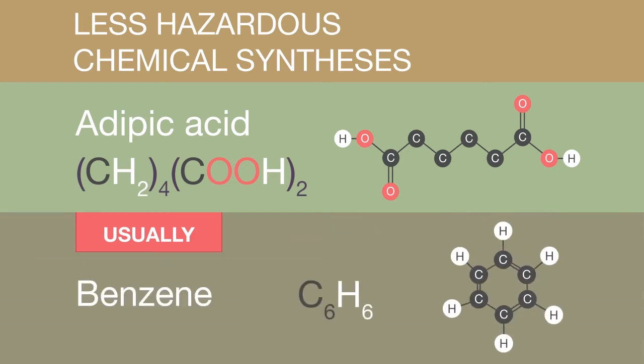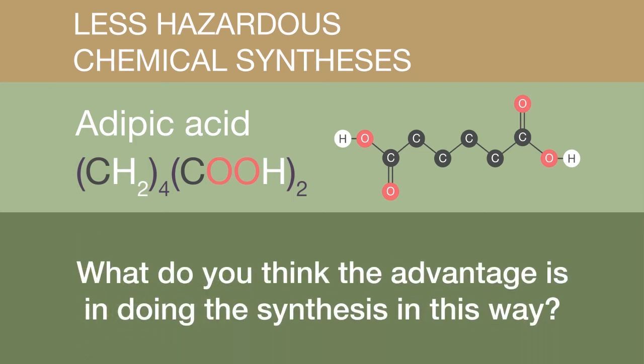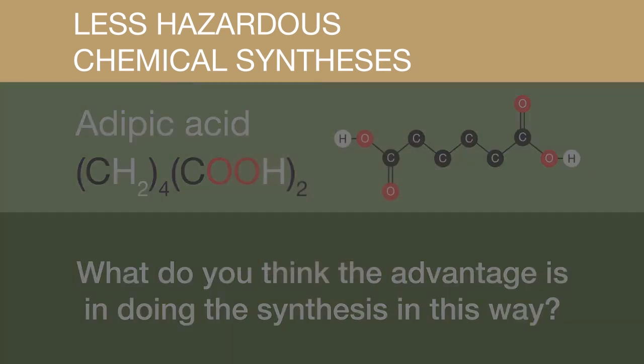Usually benzene is used to make this compound, but unfortunately benzene is carcinogenic, or cancer-causing. Instead, glucose and a special enzyme extracted from genetically modified bacteria can be used to produce adipic acid. What do you think is the advantage of doing the synthesis in this way? Pause the video, think about this, and resume when ready.